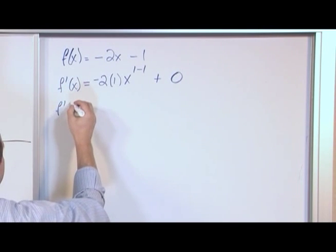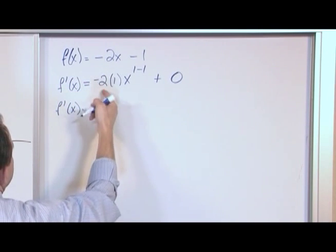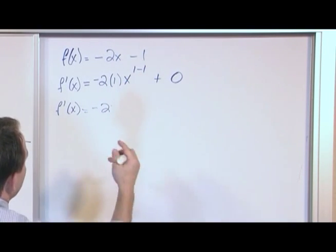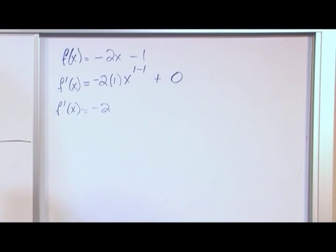So finally, the answer that we would write would be this guy, negative 2, and then we have x to the 0 power, which is just 1. So the answer is just simply going to be negative 2. So when you think about it, though, I'll take a little chance to show you an aside.